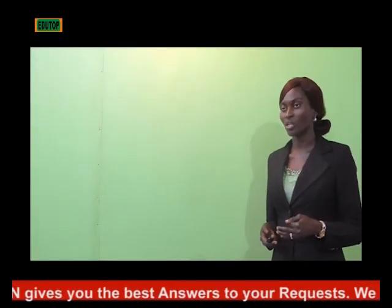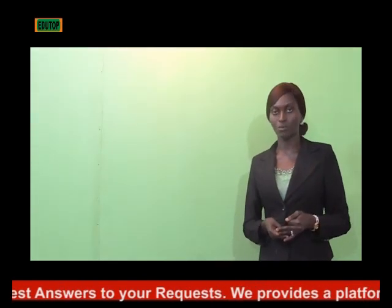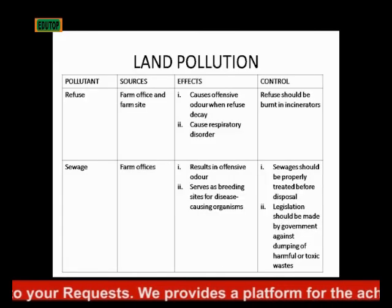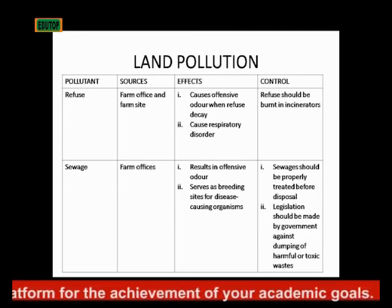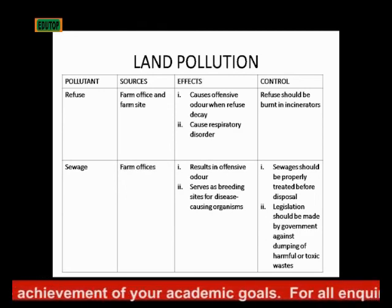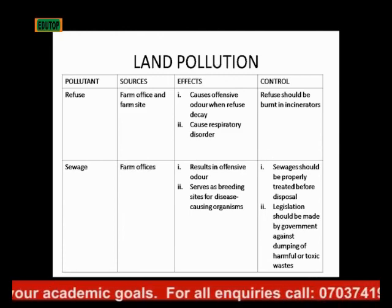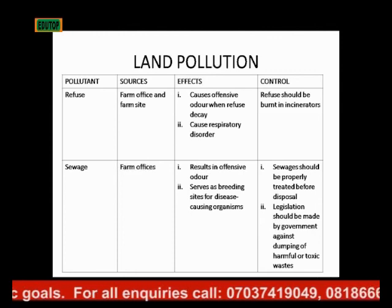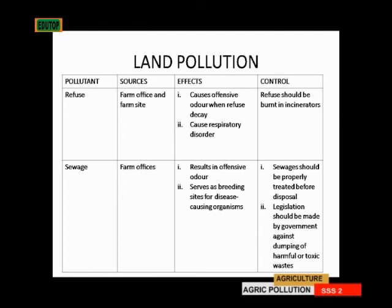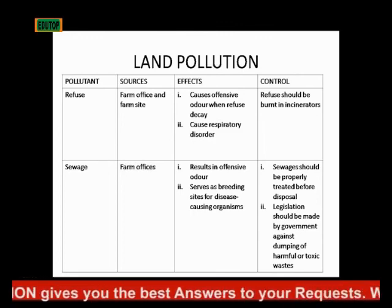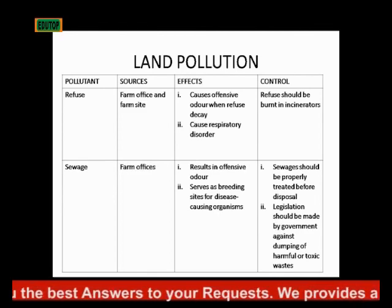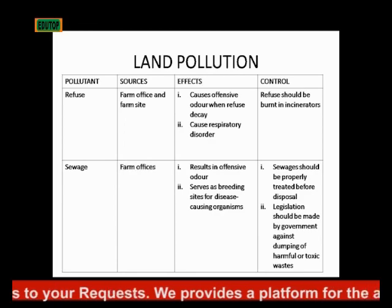The next type of pollution is land pollution. The first pollutant is refuse — refuse is dry waste. Sources of refuse are from farm offices and farm sites, where workers generate dry waste from their various activities. The effect of refuse is that it causes offensive odor when it decays and can also cause respiratory disorder. To control refuse and avoid land pollution, refuse should be burned in incinerators.